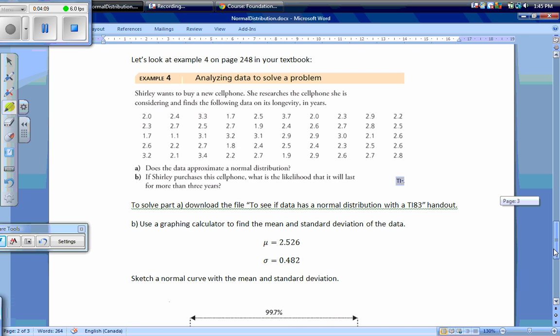Now let's look at example 4 in your textbook. Shirley wants to buy a new cell phone. She researches and finds data on longevity, how long a cell phone lasts, in years. Does this data approximate a normal distribution? And if Shirley purchases this cell phone, what is the likelihood that it will last for more than three years? To solve part A, download the file and use your TI-83 to see if it has a normal distribution.